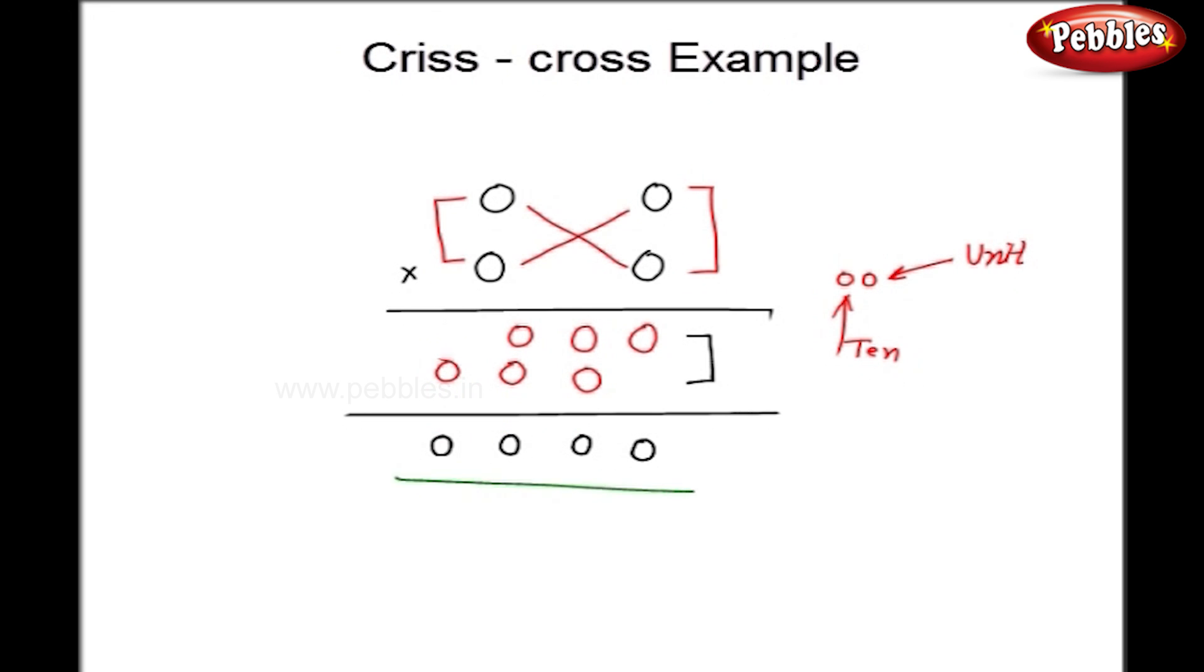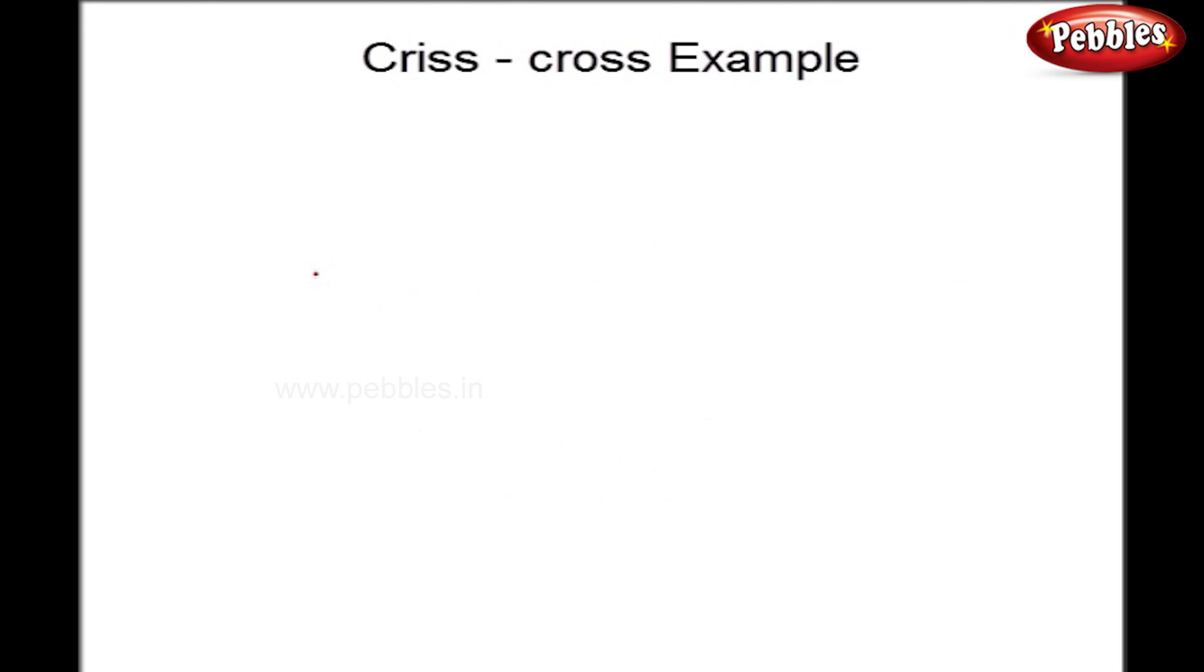So this method is exactly similar. Now, I will take a simple example, say 23 multiplied by 12. Now as a first step, I will multiply first column that is 3 into 2. So here I take 3 into 2, that is 6.